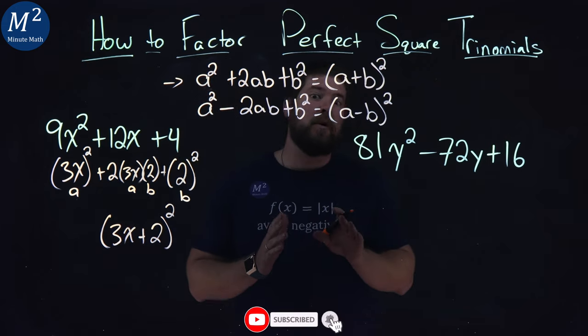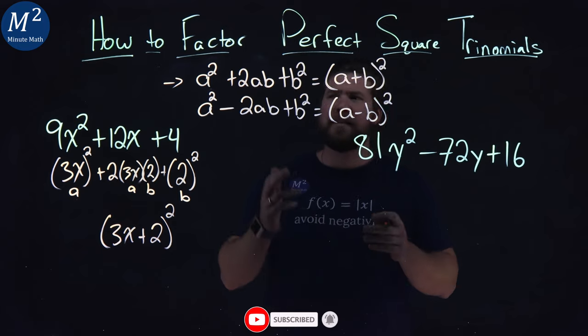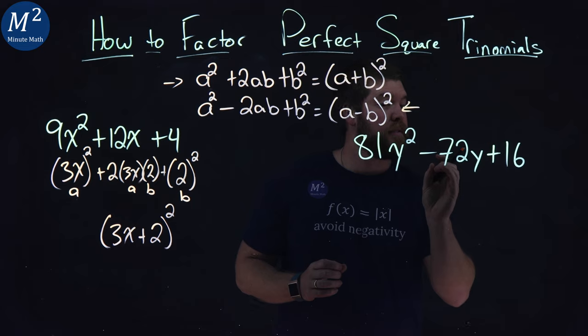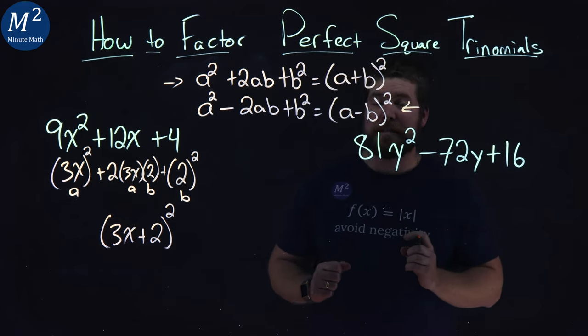Now, let's hop on over to our second example, and it's going to deal with a second formula. We have 81y² - 72y + 16.